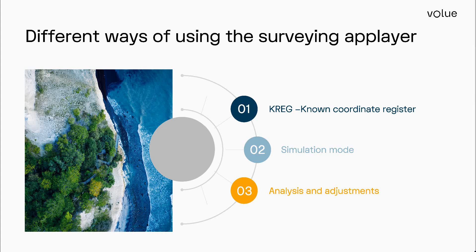The first one I'm going to talk about is that we can set up a surveying app layer as a coordinate register. Basically in this app layer you import your known points and coordinates, and these known coordinates can be used throughout the projects for other app layers. The coordinate register can also be used in other projects and throughout the company, as long as the coordinate system the app layer was set up for is the same.